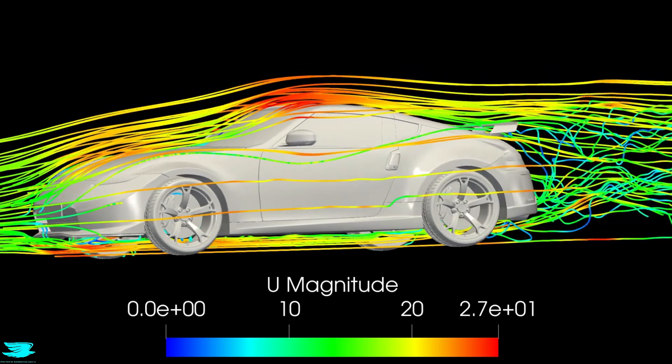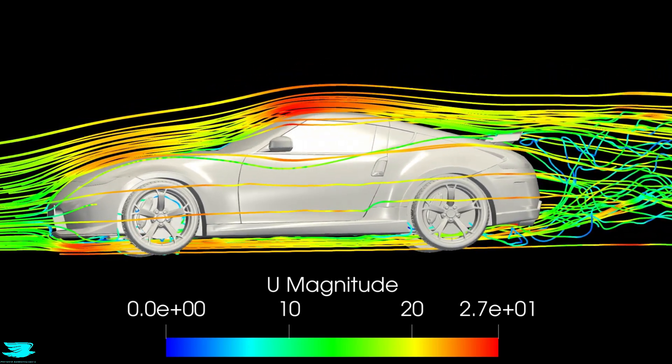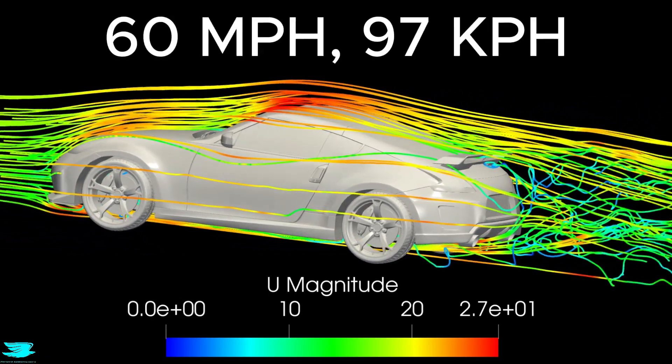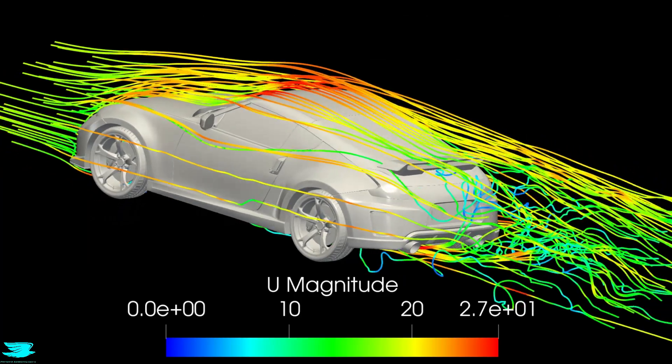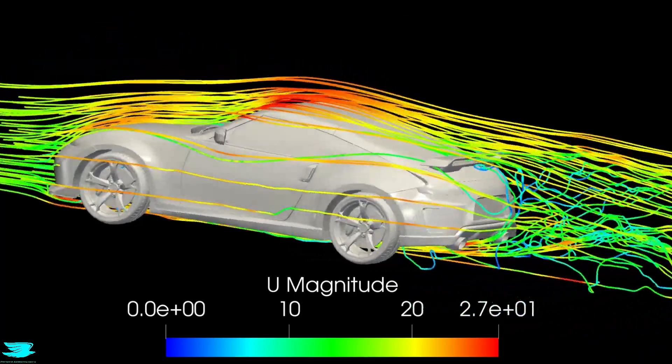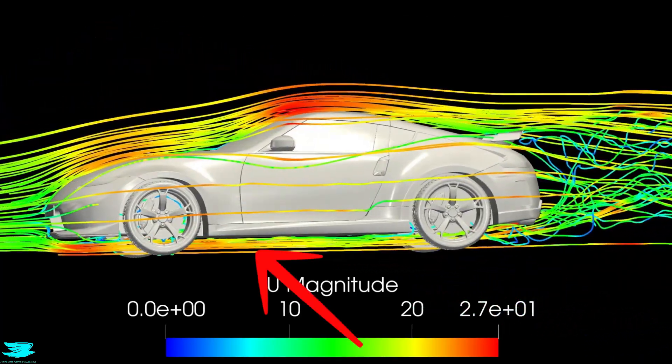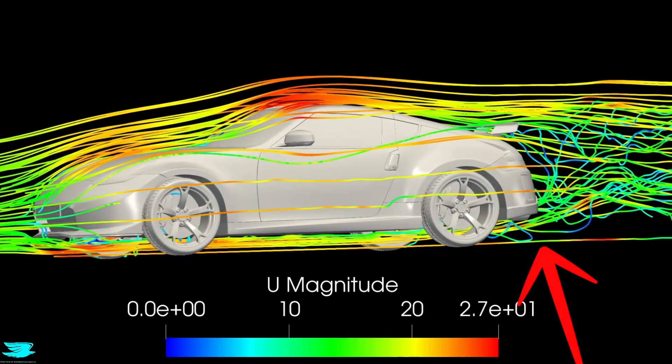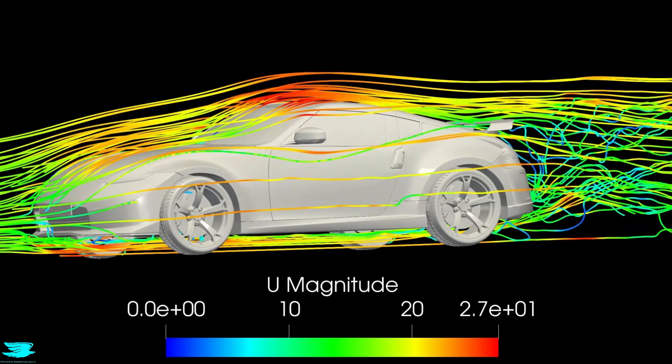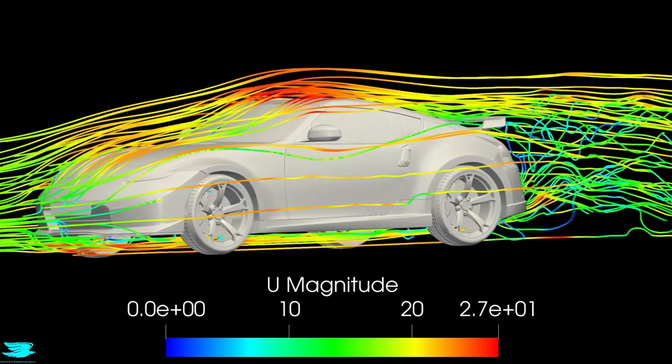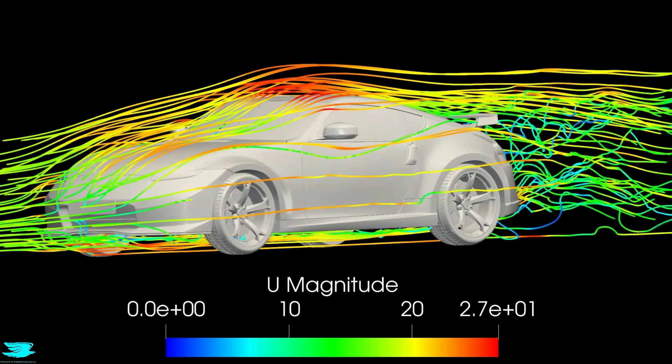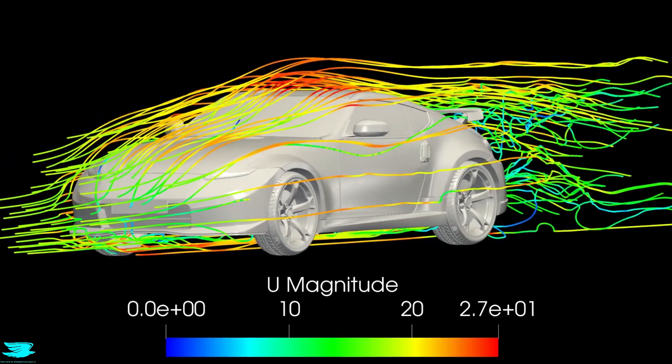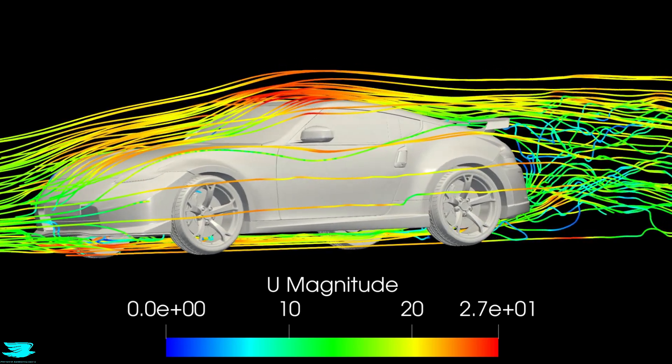These streamlines show the overall flow around the car. They're colored in velocity from 0 meters per second in blue to 27 meters per second in red, and its overall aerodynamics is good. All the main areas are performing well. For example, under the car the flow is well-behaved and the diffuser is shooting the flow up nicely, which helps reduce the wake size and drag. It's also increasing downforce over the rear wheels.